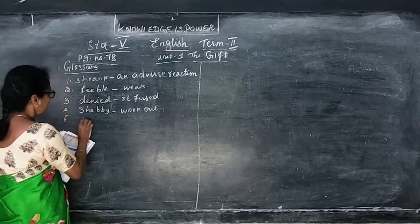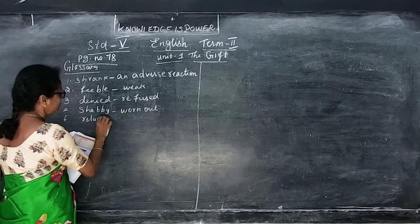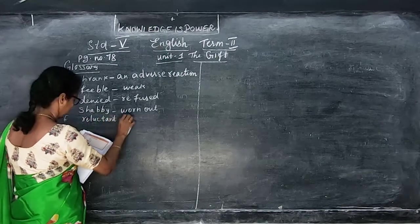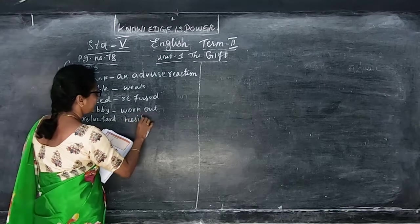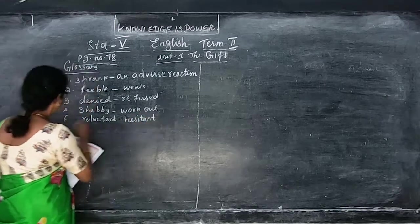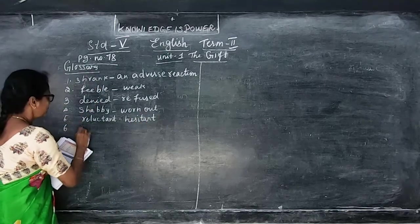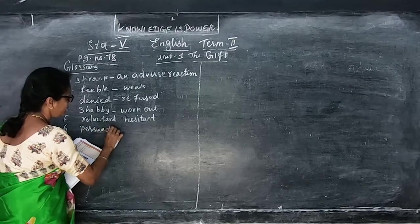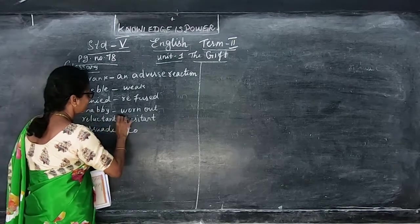Fifth: 'reluctant,' that is hesitant. Next, 'persevered,' that is convinced.